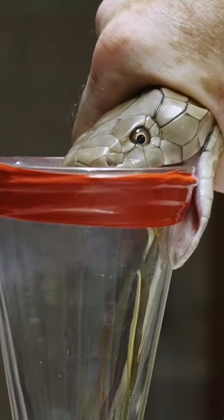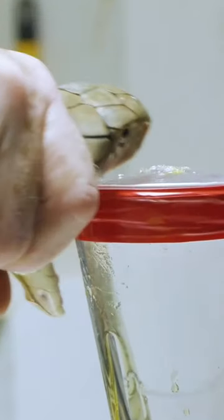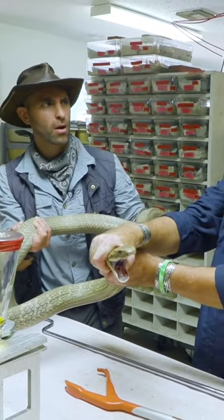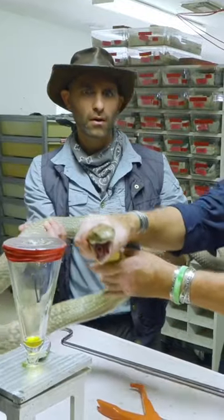We're probably looking at 300 or 400 milligrams of dry weight here. About 20 milligrams of king cobra venom is a lethal dose. So in the case of 400 milligrams, you're looking at an awful lot of lethal doses.